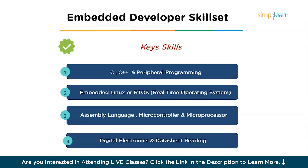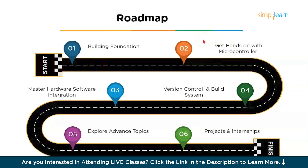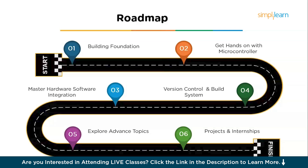Now let's discuss the exact roadmap to become an embedded developer. First, you need to build your foundation in C and C++. Then get hands-on with microcontrollers, and after that master hardware and software integration. Moving ahead, study version control systems like Git, then explore advanced topics. Finally, build an amazing portfolio through projects and go for internships. Let's explore each one in detail.